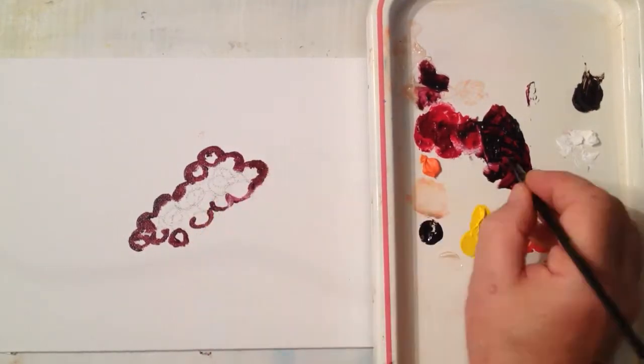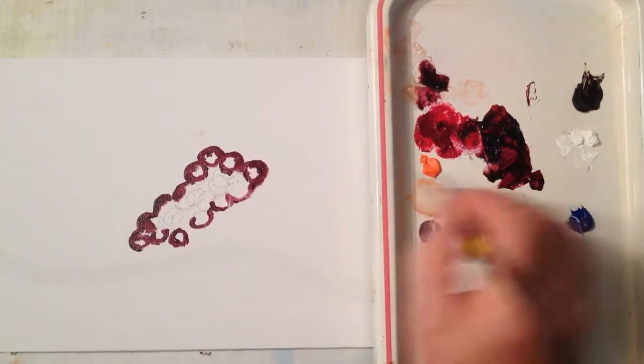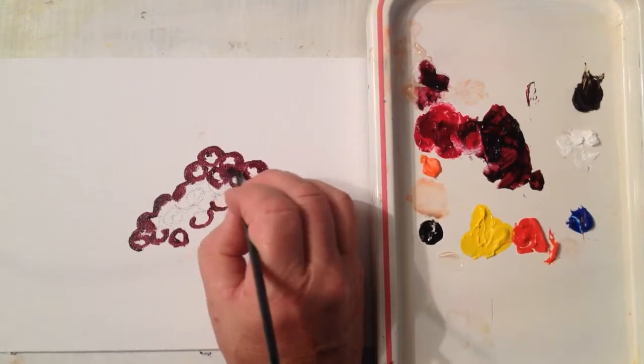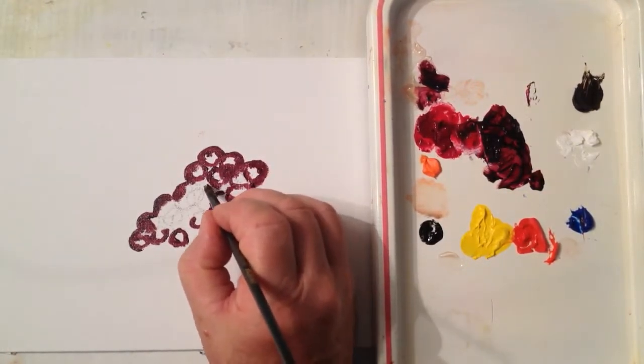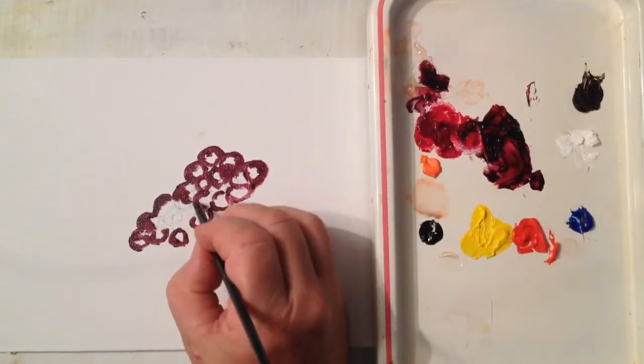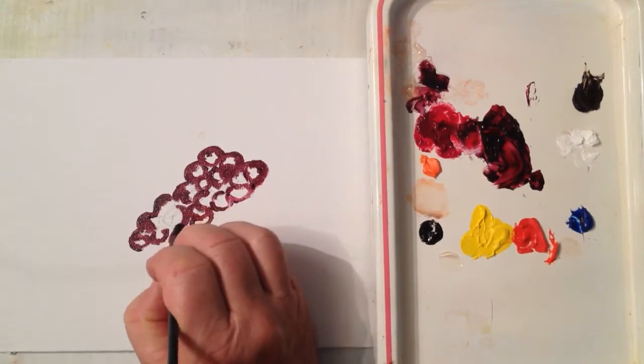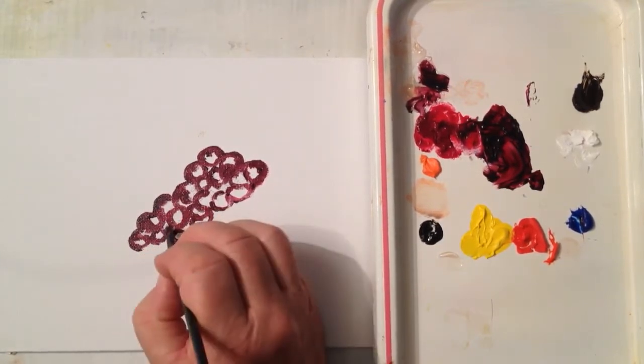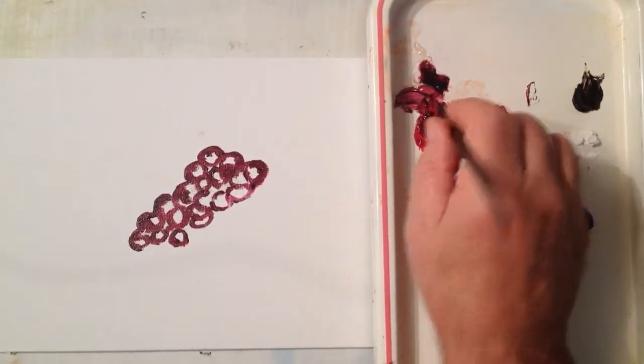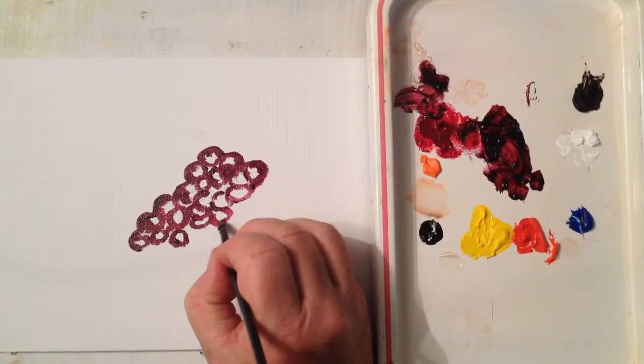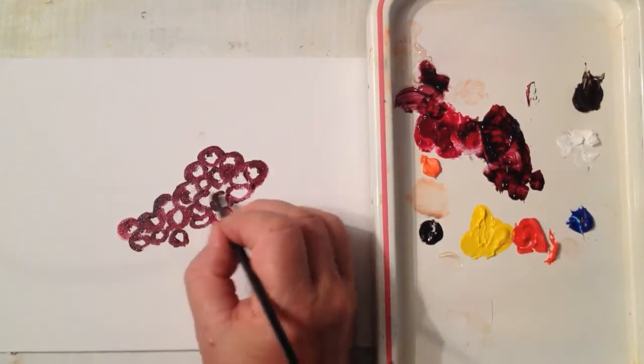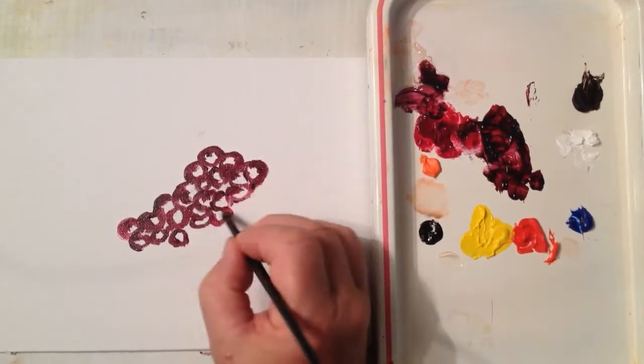The second step, try to define some of your grapes. Find your grapes and hide them in different places. Half paint them, paint half the grape.